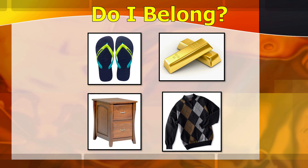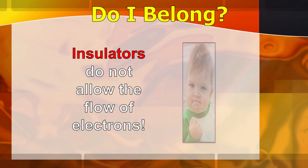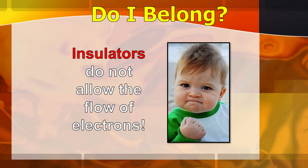Let's have another set of pictures: slippers, gold bars, a table, and a jacket. Which of the four doesn't belong to the group? If your answer is gold, you are correct, because the other three are known to be insulators. Insulators are materials which don't allow the flow of electrons. That's why we sometimes don't get electrocuted because certain materials we use are insulated or wrapped in insulating material.